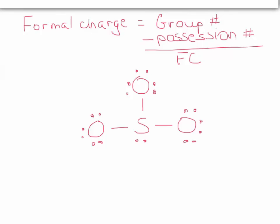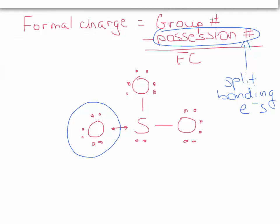Now when we do formal charge, when we do possession number, what we're going to do is split the bonding electrons. So this isn't like drawing an octet circle. It's actually going to split the bonding electrons. So if I consider this oxygen, and I draw a circle around it, it owns all of its lone pair electrons, but only half, formally, of the electrons in the bond. Now, what group is oxygen in in the periodic table? It's group six.